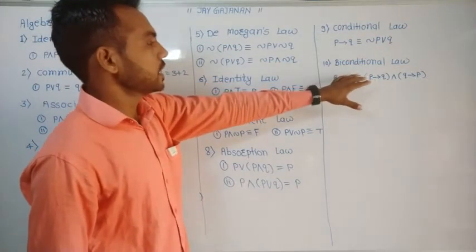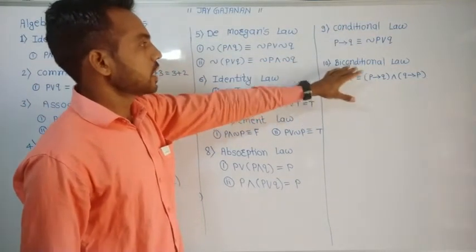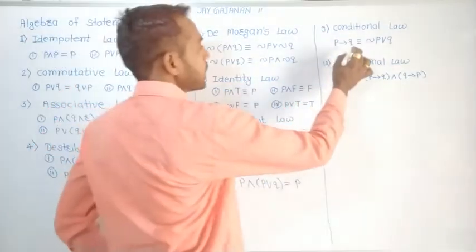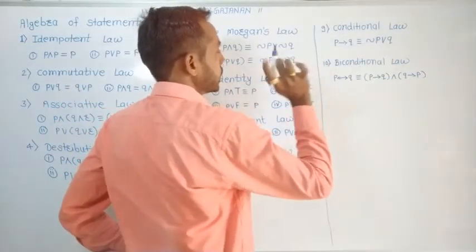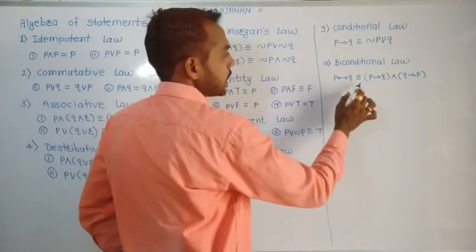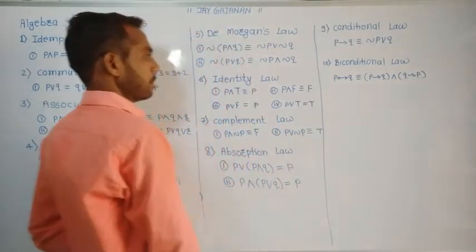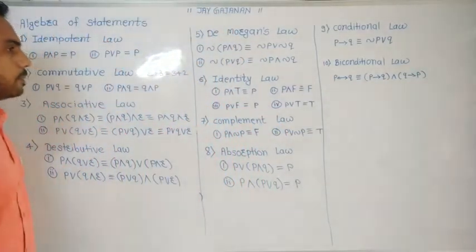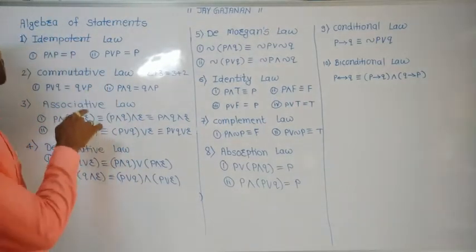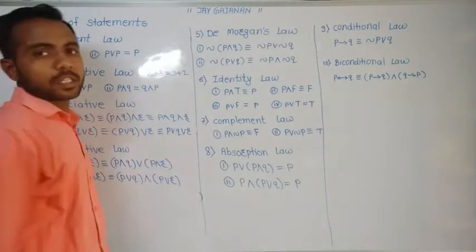Conditional law and biconditional law are very important. P implies Q means negation P or Q. The biconditional law is P double-implies Q equals (P implies Q) and (Q implies P). Keep all these laws in mind — they are very important for exercise 1.4.